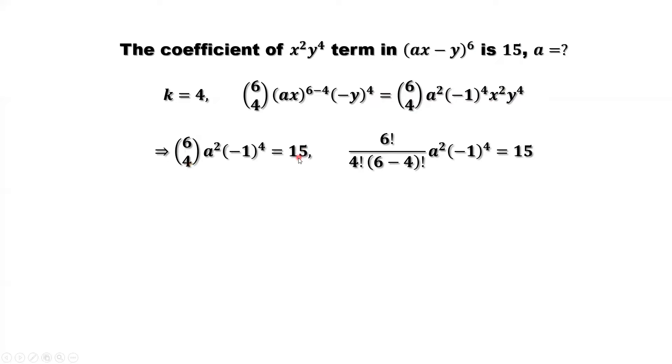This is 15 from the given condition. Solve this equation for a. Simplify the left hand side. 6 pick 4 is 6 factorial over 4 factorial times 6 minus 4 factorial. Simplify. We have 15 a squared equals 15. This implies a squared equals 1.